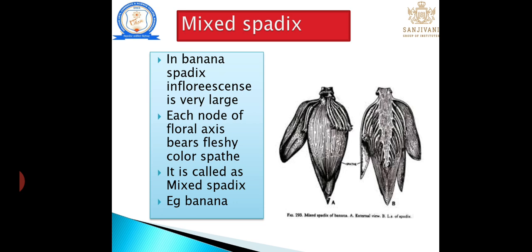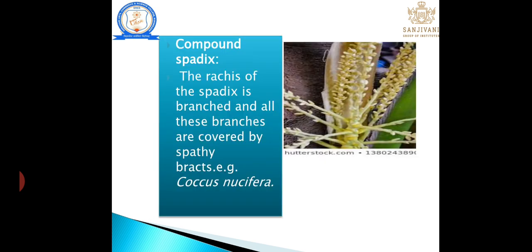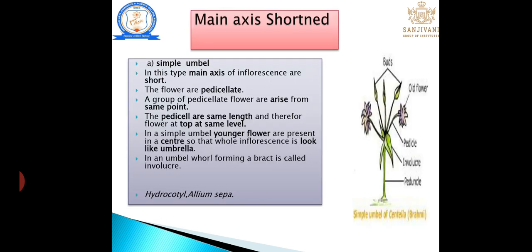Mixed spadix: male, female, and sterile flowers are in a mixed condition. At each node, the floral axis bears a fleshy, colored spathe, hence it is known as a mixed spadix. For example: banana. Compound spadix: the rachis of the spadix is branched and all branches are covered by spathe bracts. For example: Cocos nucifera (coconut).